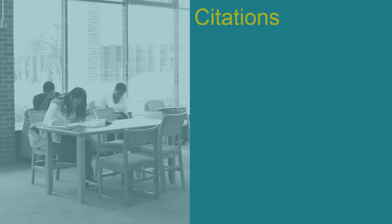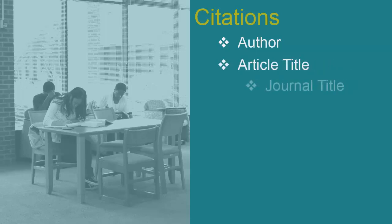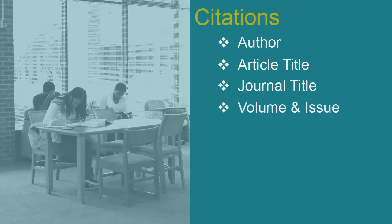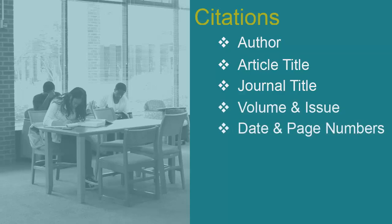A citation has all the information needed to reference a specific article, including the author, article title, journal title, volume number and issue number, date, and page numbers. More importantly, it documents the articles you used in writing your paper.